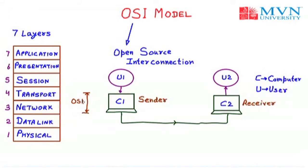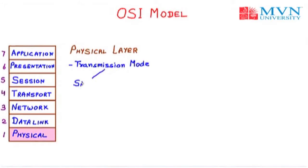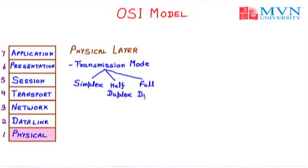Now, what are the functions of all layers? We are going to discuss the first layer — the physical layer. The physical layer is the very starting layer and has various characteristics. The first characteristic is that it provides the transmission mode. Transmission modes may be simplex — meaning one-side communication where only one sender sends data and the other party only receives. Second is half duplex — two-way transmission, but only one party can send at a time. Third is full duplex — both parties can send and receive data at the same time.